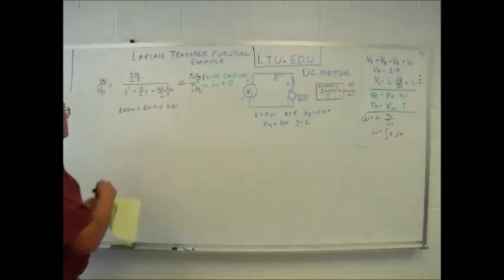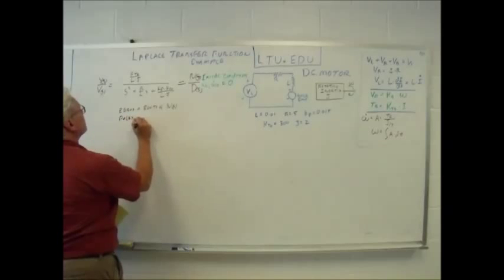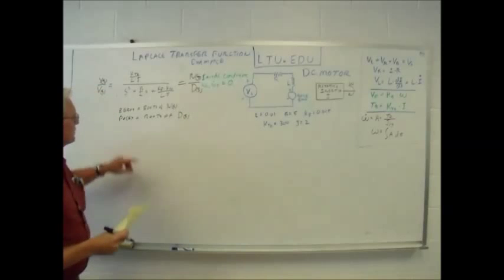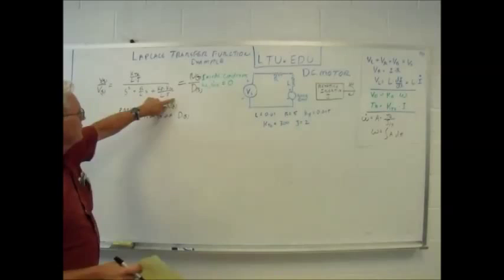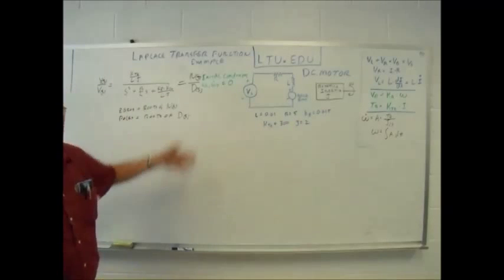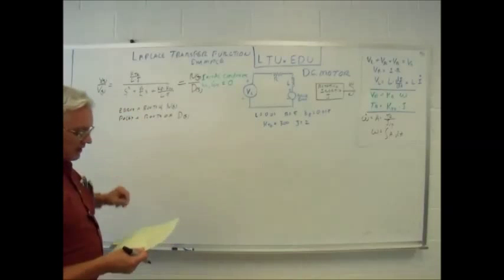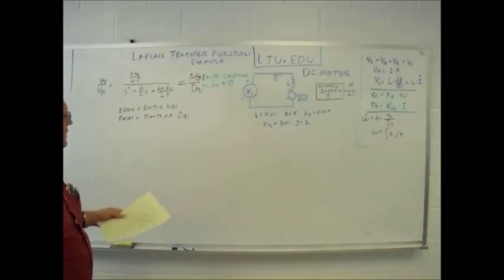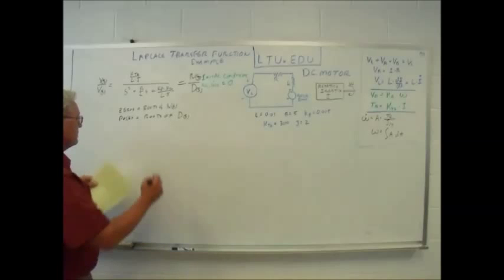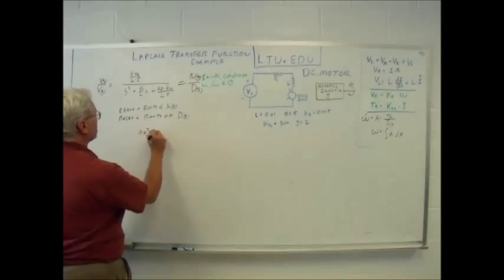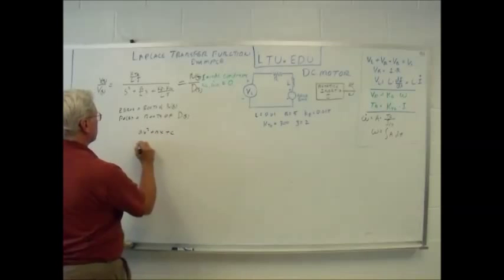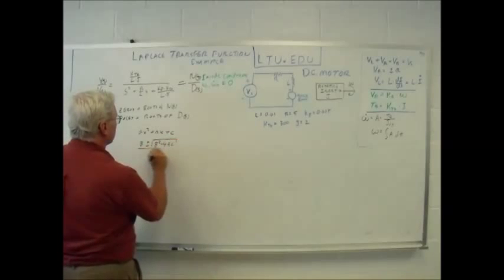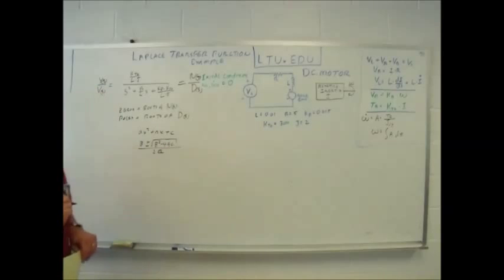So what we want to do is look at the poles and zeros. Let me write this here as N of s over D of s. So we have the numerator and the denominator. Zeros are the roots of N of s, the roots of the numerator. Those are the values of s that cause this numerator to go to zero, and cause the whole transfer function to go to zero. And in this case, there are none. Poles are the roots of the denominator, D of s. So those values that cause the denominator to go to zero. When the denominator goes to zero, obviously this transfer function goes to infinity, hence the name poles. And we see there are going to be poles. It's a second order equation here, so I know that there's going to be two poles. How do we find them? Well, because it's second order, we can apply the quadratic equation.